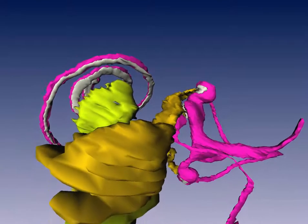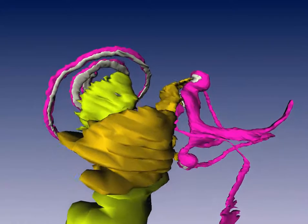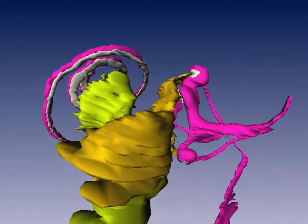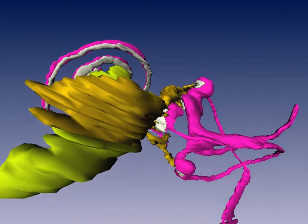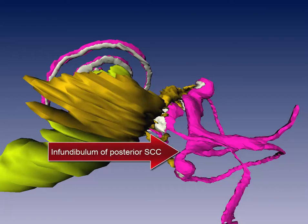The common crus shown here is the confluence of the posterior and superior semicircular ducts. Also shown here is the infundibulum of the posterior canal.